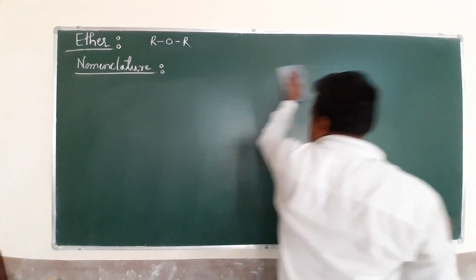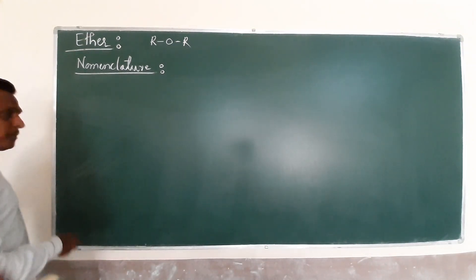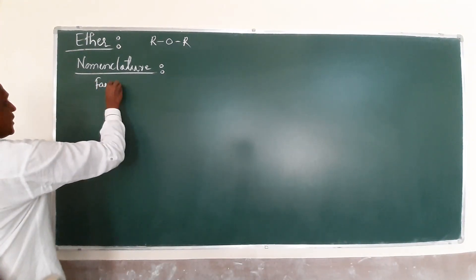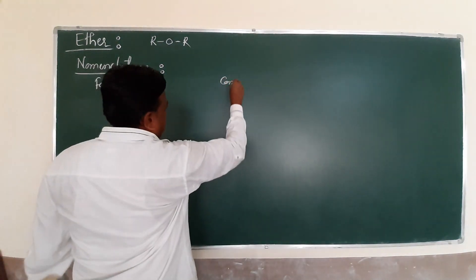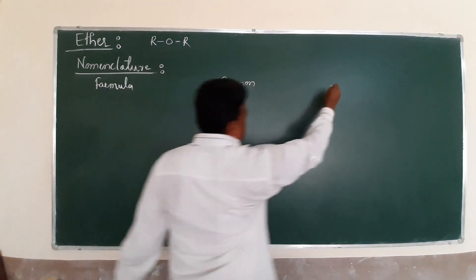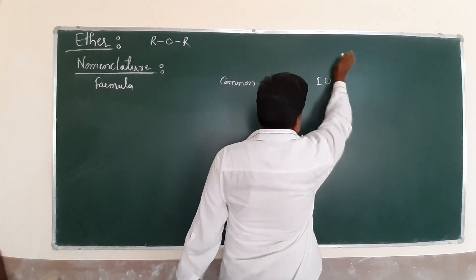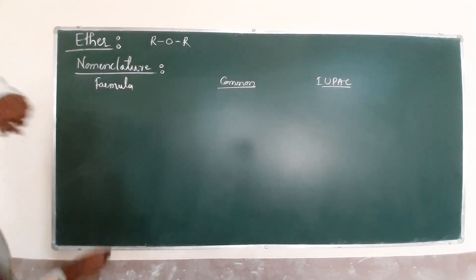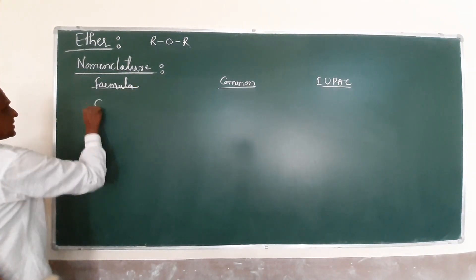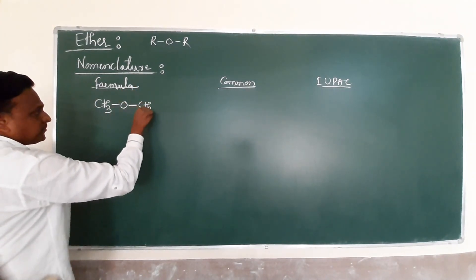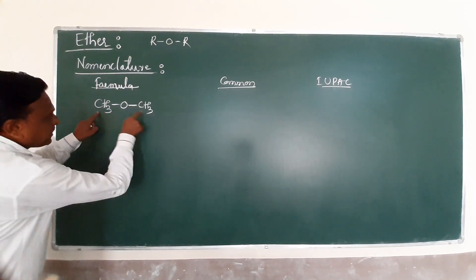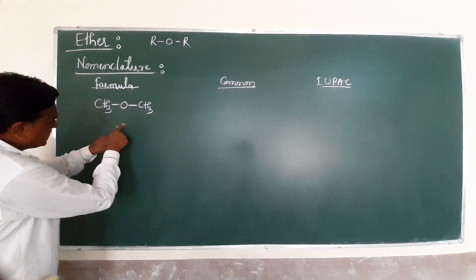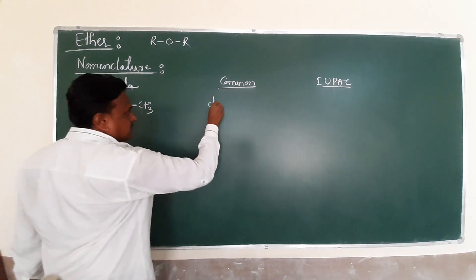We will completely discuss this with corresponding examples - simple as well as mixed. We start with the first simple ethers. We can have columns: formula, common name, and IUPAC. In simple ether, we start with CH3-O-CH3.